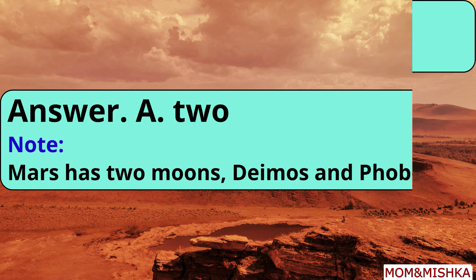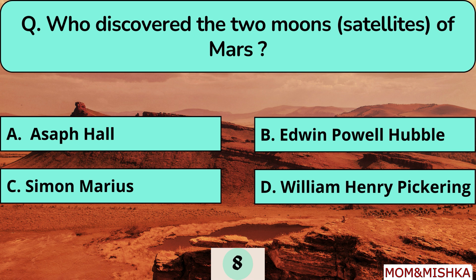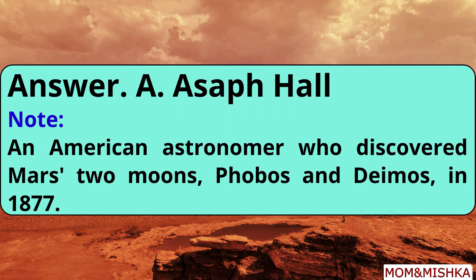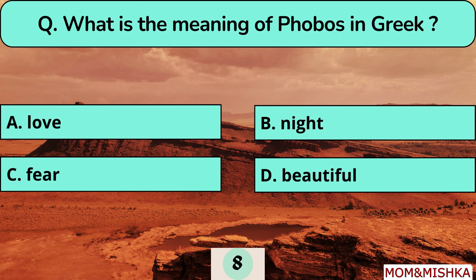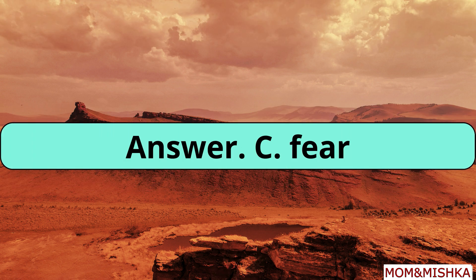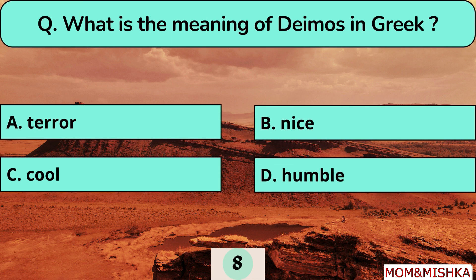The two moons of Mars are named Phobos and Deimos. They were discovered by Asaph Hall, an American astronomer, in 1877. The meaning of Phobos in Greek is 'fear', and the meaning of Deimos in Greek is 'terror'.